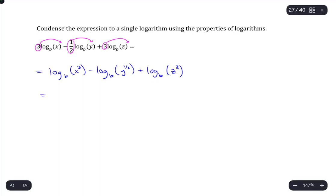So what I can do here, I can take this one and this one which are added together, combine those into log base b of x cubed times z cubed, and then the next one I'm going to leave alone.